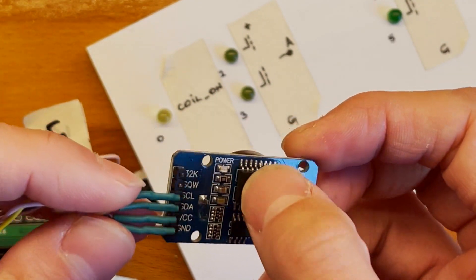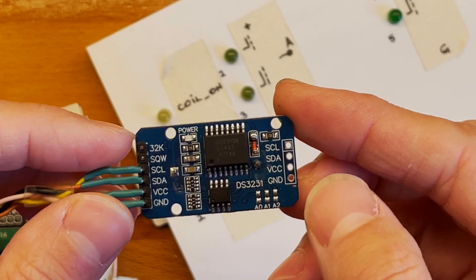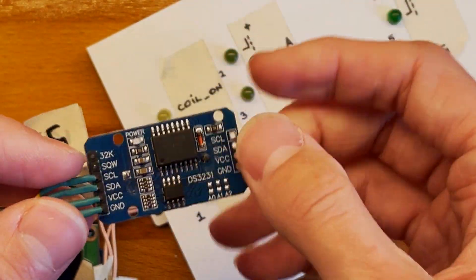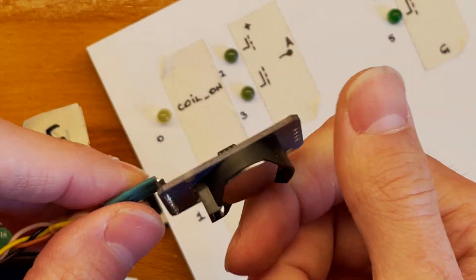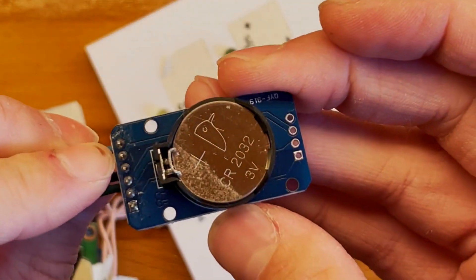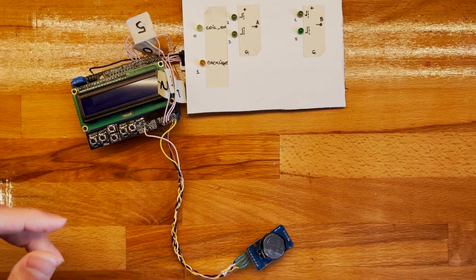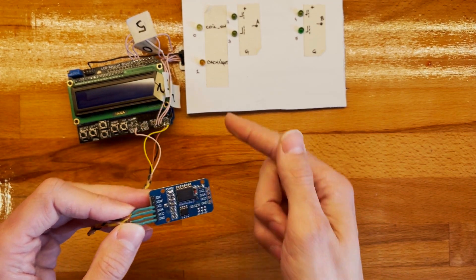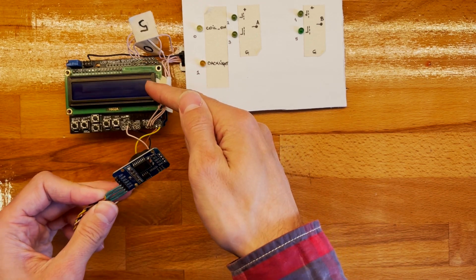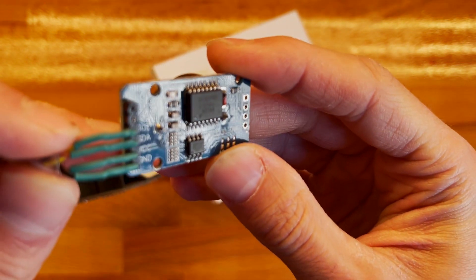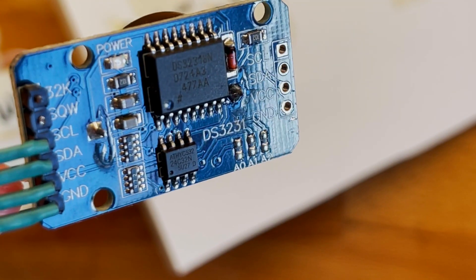It uses a bunch of microamps, basically holding your hand here will possibly pull more current from the battery than the actual chip itself. It should last eight years if the battery doesn't self-discharge, which lithium primary doesn't really. We're getting our time from here. This also has an EEPROM which I'm not using. The Arduino also has some EEPROM inside of it, 1K I think.